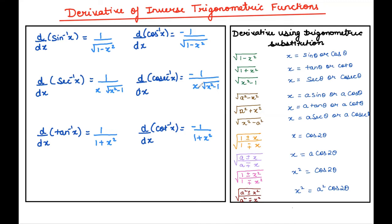We already know the derivatives of trigonometric functions. Now we will learn the derivatives of inverse trigonometric functions. The derivative of sin⁻¹x is 1/√(1−x²). For cos⁻¹x, remember that all co-functions — cos⁻¹, sec⁻¹ wait cosecant, cot⁻¹ — have negative derivatives. The derivative of sec⁻¹x is 1/(x√(x²−1)), and cosec⁻¹x is −1/(x√(x²−1)). The derivative of tan⁻¹x is 1/(1+x²), and cot⁻¹x is −1/(1+x²).